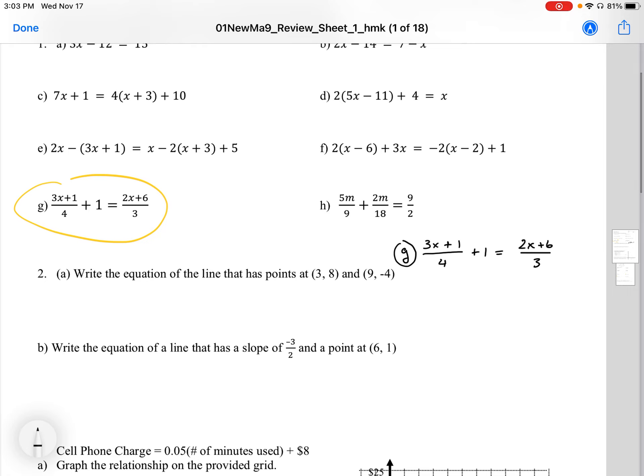Question G is a rational equation and we need to solve this for x. We can get rid of the denominators by multiplying by the 4 and the 3. We can do this on both sides of the equation to balance the equation.